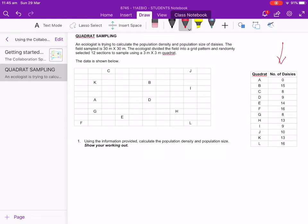Now what it's asking you to do is go through and calculate the total population density and the population size and try and show your working out. So this is how we're going to work our way through it.